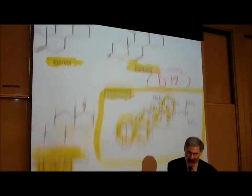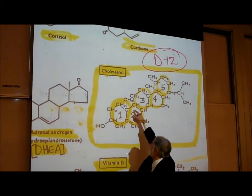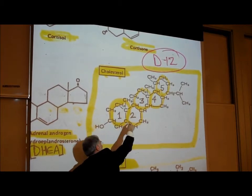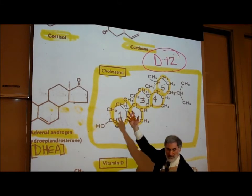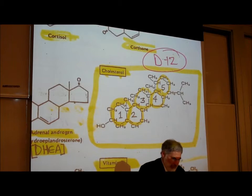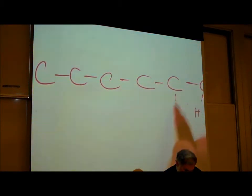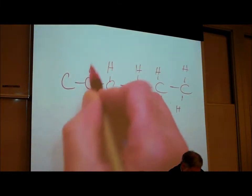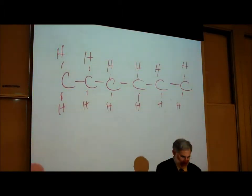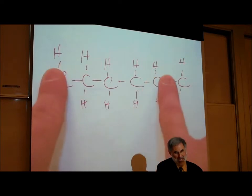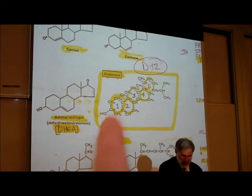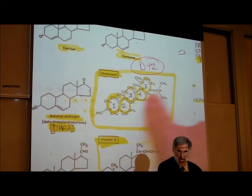Cholesterol looks like a somewhat complicated organic molecule — it's just chains of carbon atoms with hydrogens attached, looped into about five rings. Remember a saturated fat just looks like a long chain of carbon atoms with hydrogens attached. What our liver can do is take these long chains of carbon atoms with hydrogens attached and simply loop them into a ring shape, join them together — and that's called cholesterol.